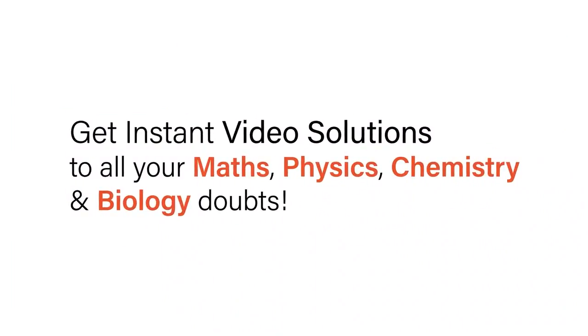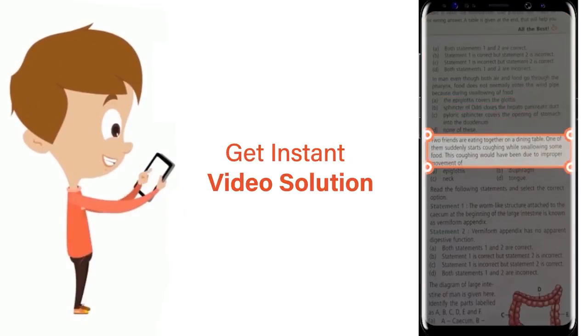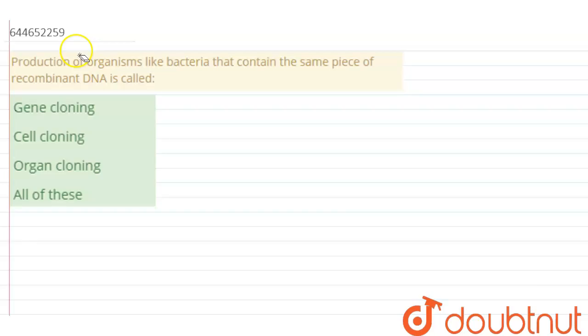With Doubtnut, get instant video solutions to all your maths, physics, chemistry and biology doubts. Just click the image of the question, crop the question and get instant video solution. Download Doubtnut app today. Hello there, the question is: production of organisms like bacteria